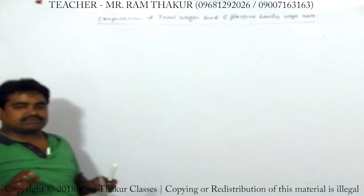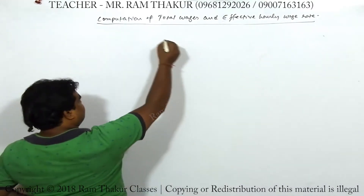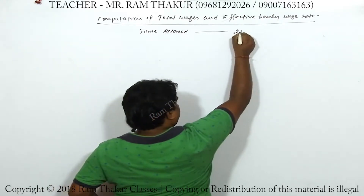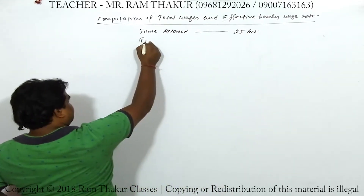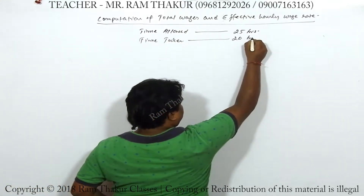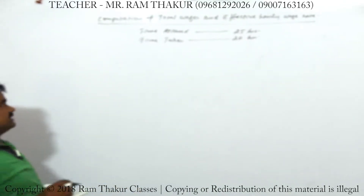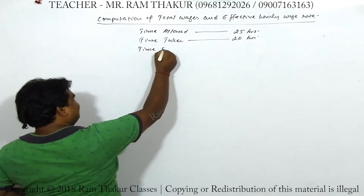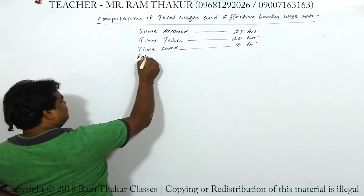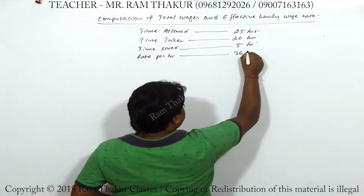कभी भी हम लोग जो भी information दिया है उसको simplified form में convert कर लेंगे। Time allowed: 25 hours. Time taken: 20 hours. Time saved: 5 hours. Rate per hour: 36 rupees.